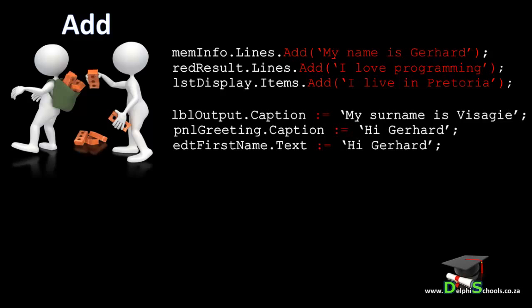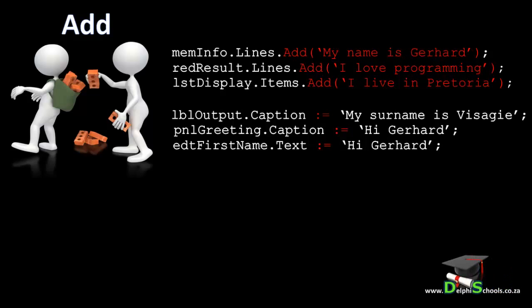The caption properties of labels, panels, and buttons are not collections — they only contain a singular value. The text property of an edit can also only contain a singular string value. We do not call an add method to pass string values to captions and text. We assign a string value to a caption or a text property by using an assignment operator.